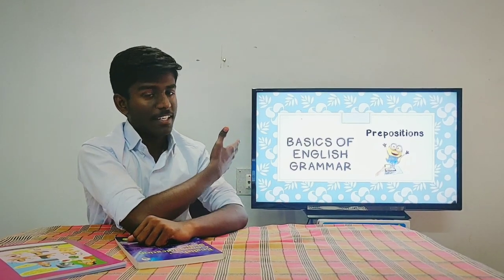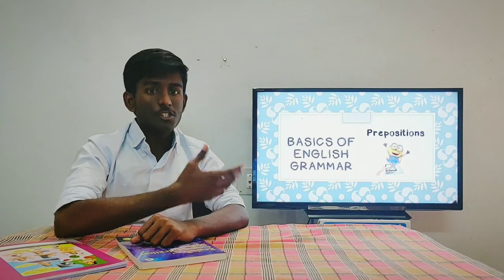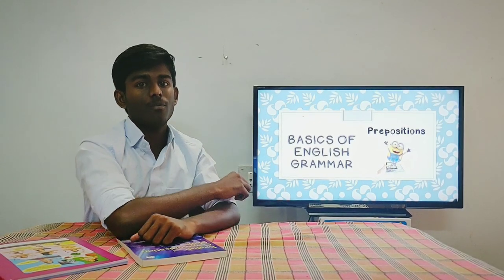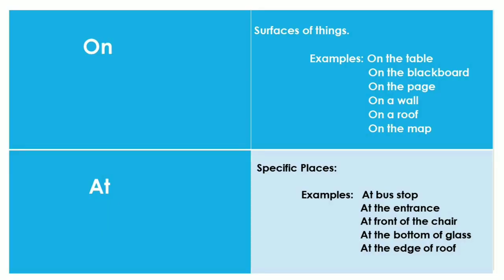For more clarity: the book is on the table — here, the table is a surface. The TV is set on the wall — here, the wall is a surface. The teacher asked the student to draw a picture on the blackboard — here, the blackboard is also a surface. The third preposition for places is 'at,' used to denote specific places — for example, at the bus stop, at the entrance, at the front of the chair. My friend will be waiting for me at the bus stop. At the entrance, food is here for students. At the front of the chair, the chairman is standing.